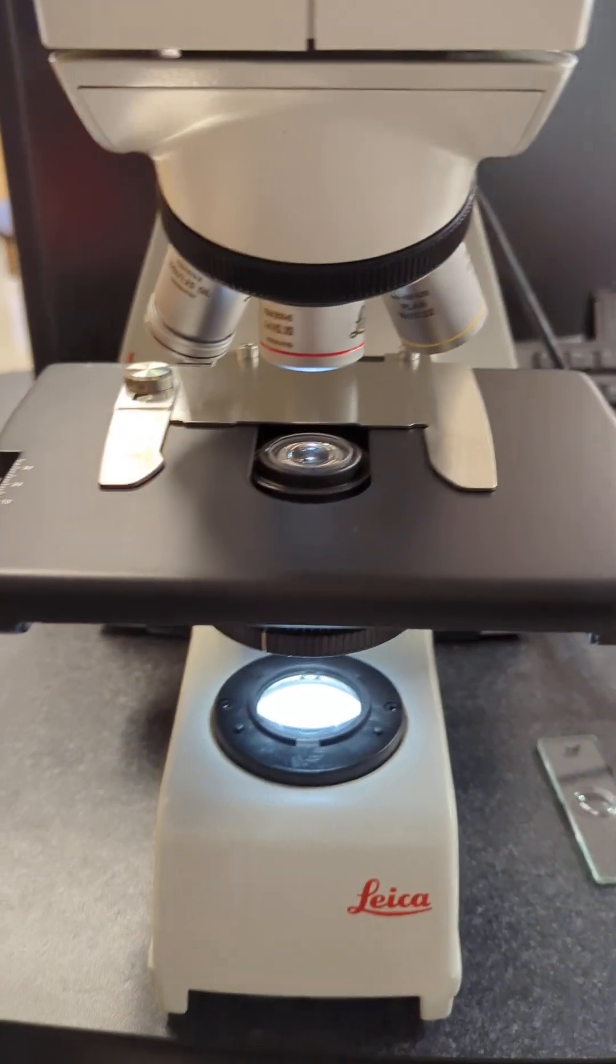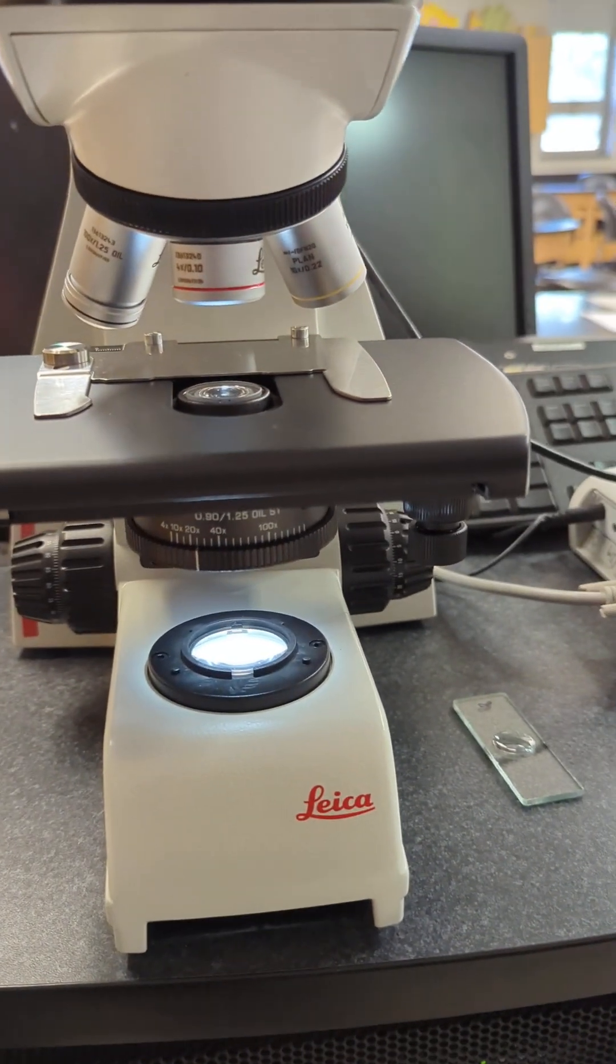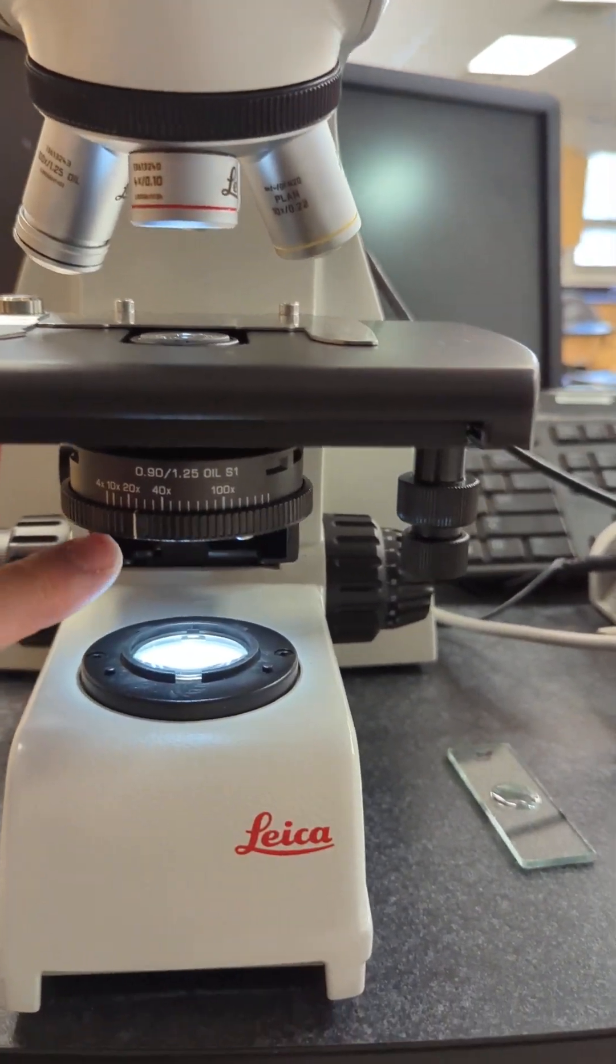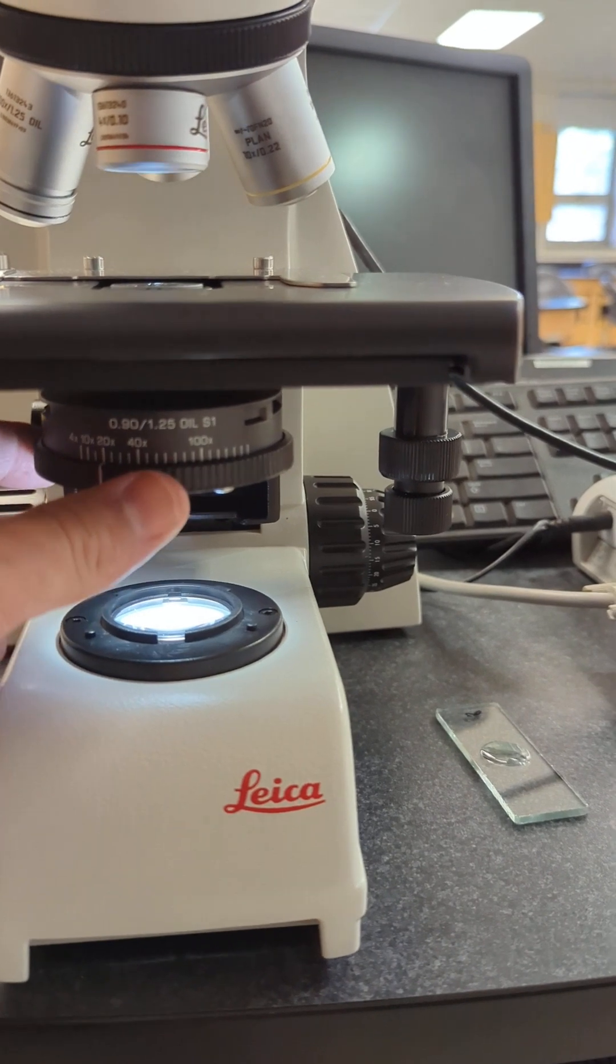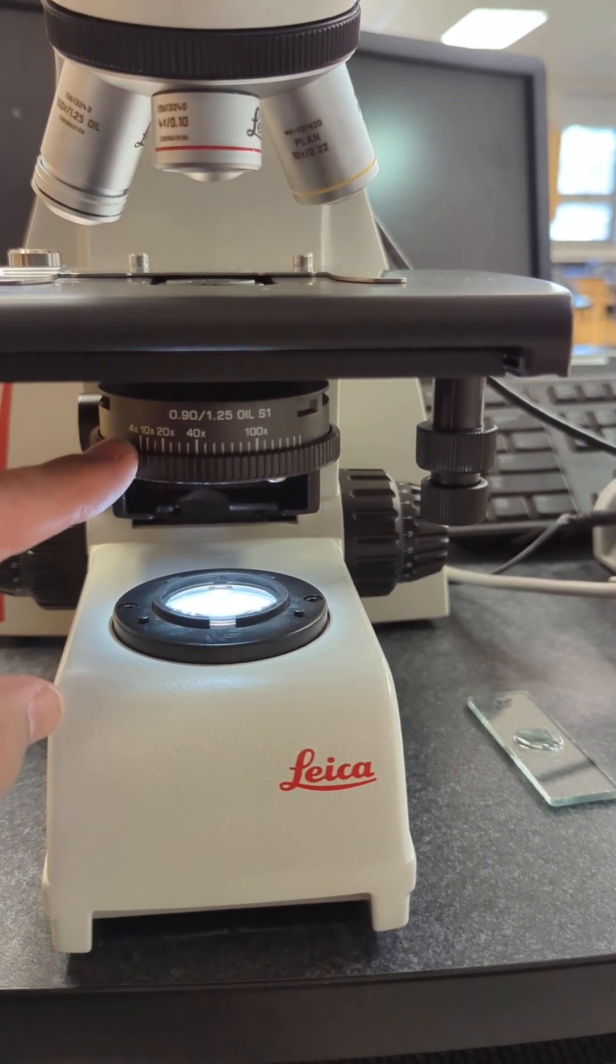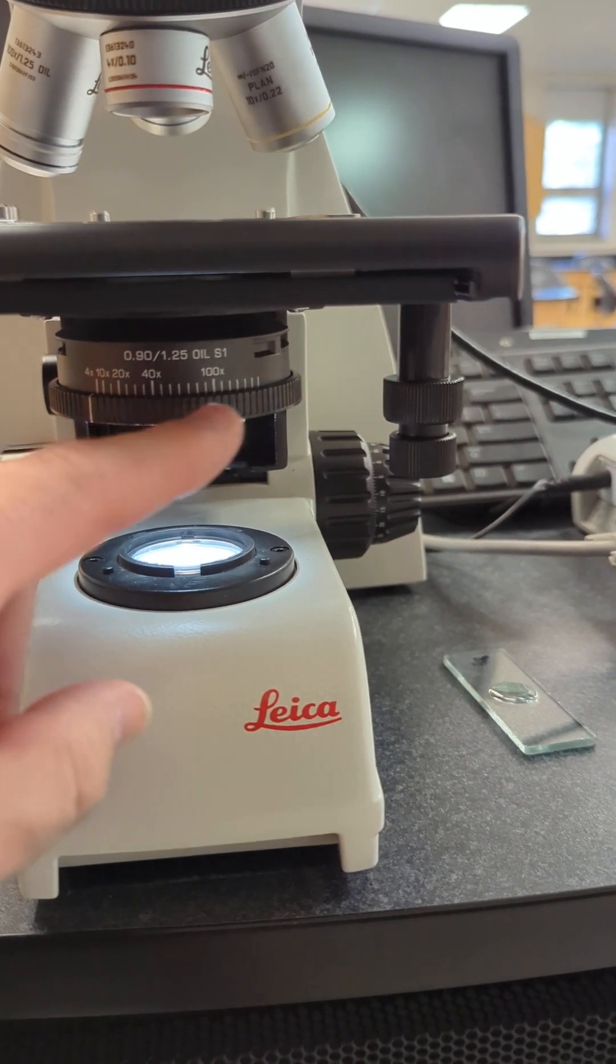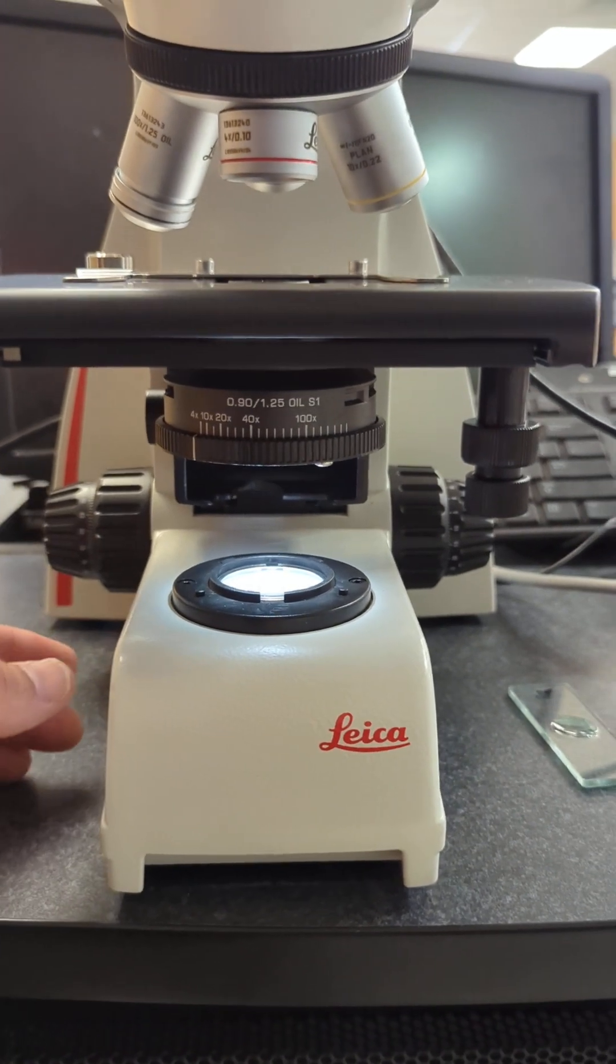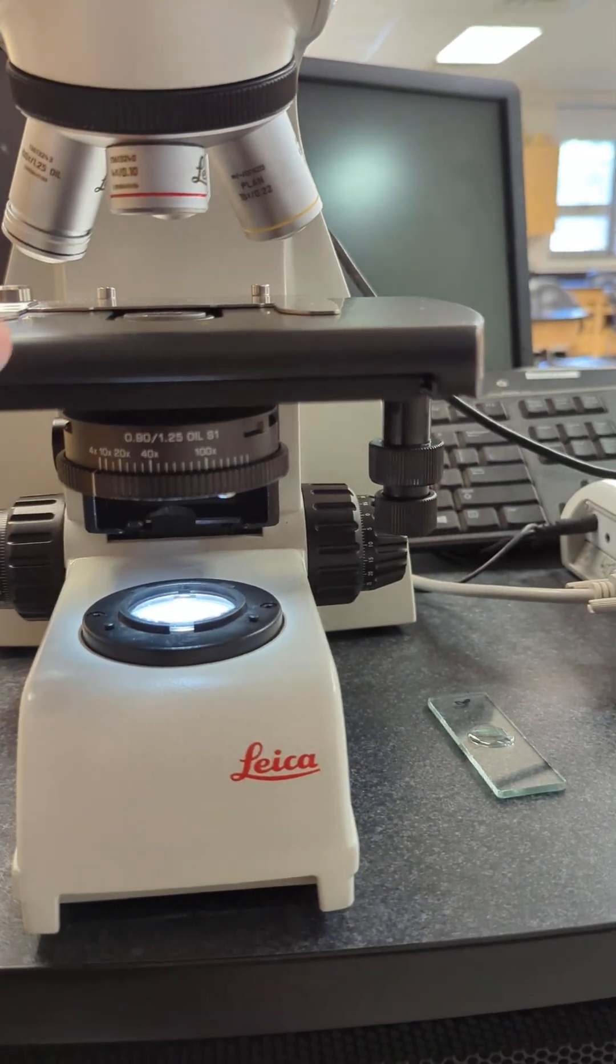Down here on the stage, there are a few things. At this level, you can see if we're on 4x, there's a thing called a condenser underneath. You want to make sure that's set to 4x. It coincides with the 4x, 10x, 20x, 40x, 100x labeled on there. That gives you the proper amount of light coming up through the condenser aperture.